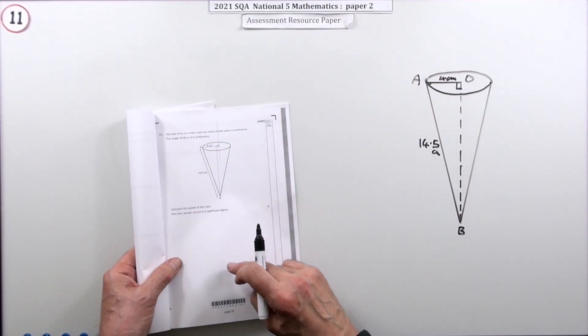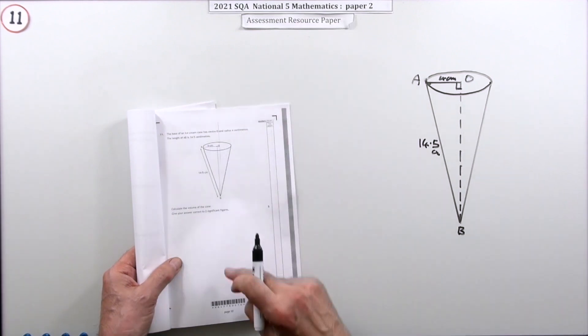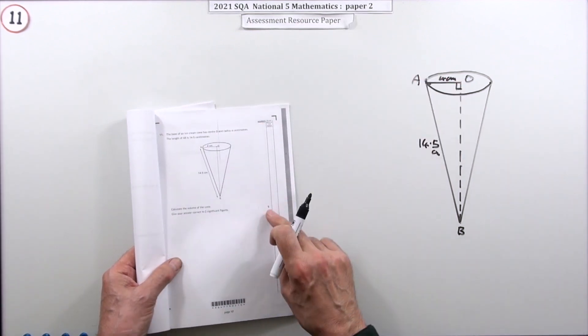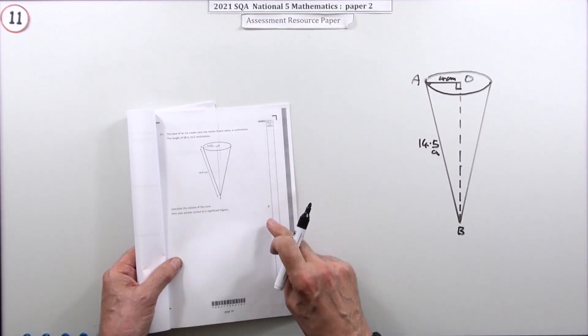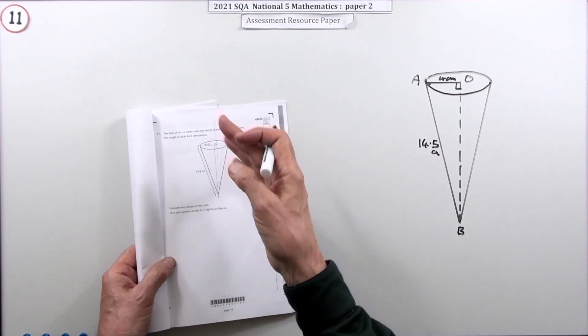So number 11 from paper 2, the 2021 National 5 resource paper: volume of a cone for five marks. Now the only reason it's five marks for working out the volume of a cone when you've got the formula at the front is because...